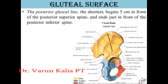The posterior gluteal line is the shortest; it begins 5 cm in front of the PSIS and ends just in front of the posterior inferior iliac spine. In the diagram, this small line starts 5 cm in front of the posterior superior iliac spine and ends near the PIIS.